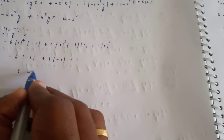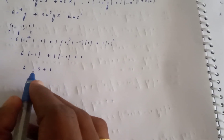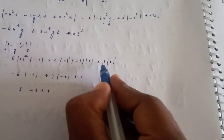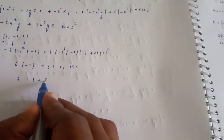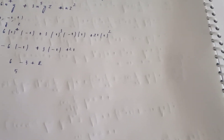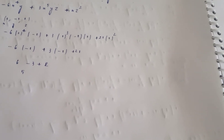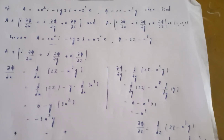Final computation: 6 minus 3 plus 1 equals 7. So the dot product value is 7. That's the final answer. Subscribe to my channel, like, share, and comment. Thank you.